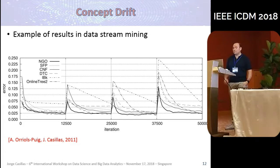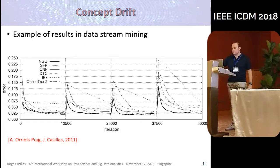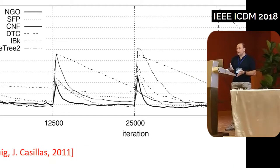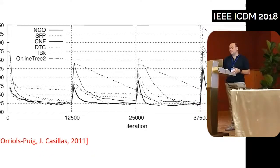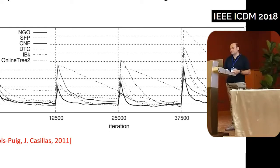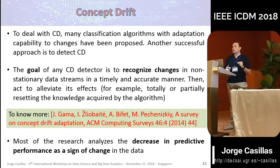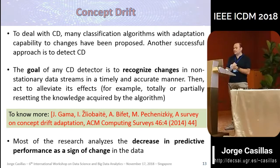Here you have an example of the performance of different classification algorithms for data stream mining. We have three concept drifts, and different algorithms improve their performance as they receive more data. Once a concept drift occurs — for example here at 12,500 — the error starts increasing. If the algorithm has good adaptability, the error decreases again until the next concept drift. The goal today is to propose a concept drift detector that is able to recognize these changes.